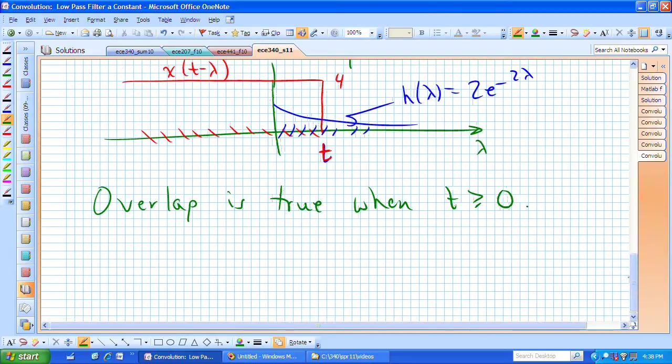As long as t exceeds 0, our output is now this integral from 0 on lambda up to t. That's where both of these intervals of support overlap.